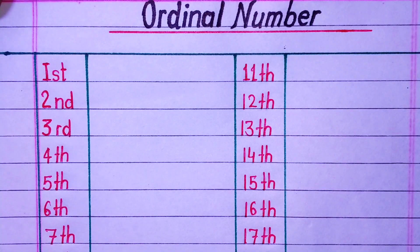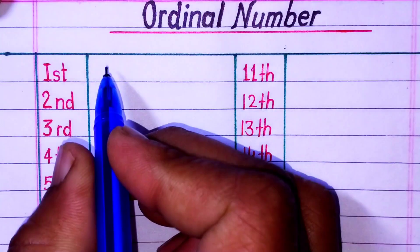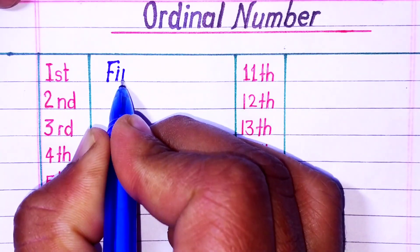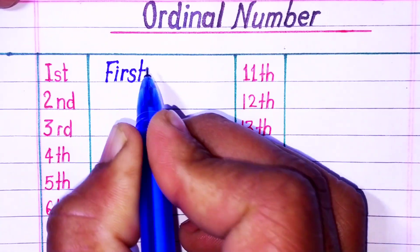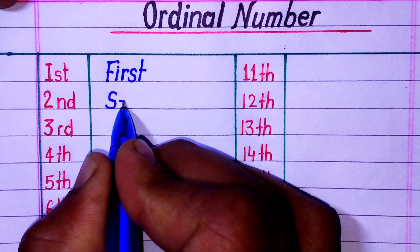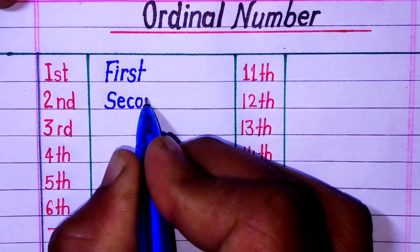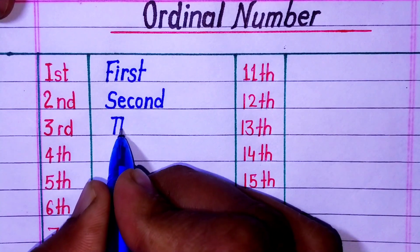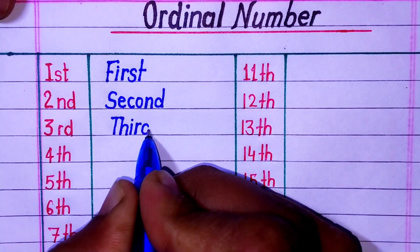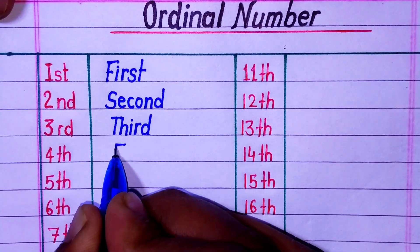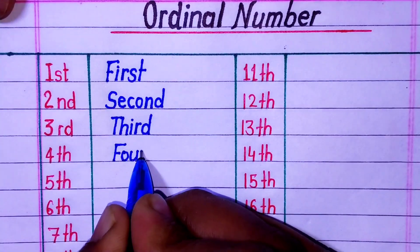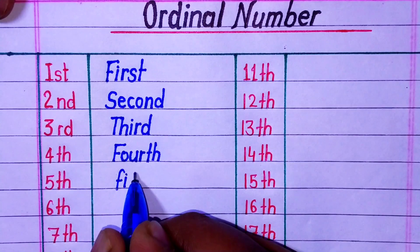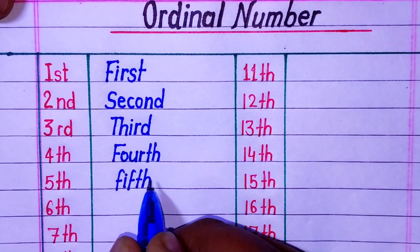Hello friends, welcome to our channel. In this video we will learn and write ordinal numbers. First. Second — S E C O N D. Third — T H I R D. Fourth — F O U R T H. Fifth — F I F T H.